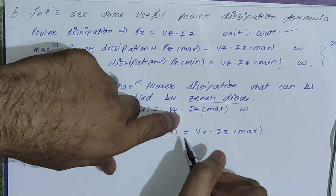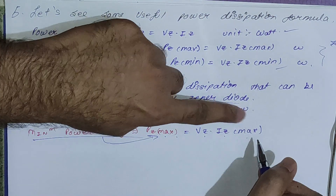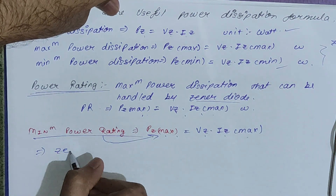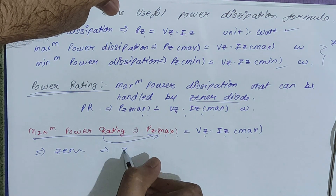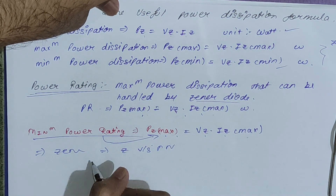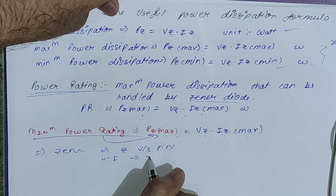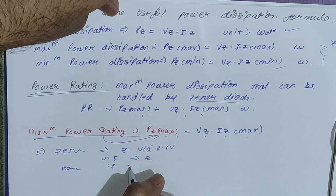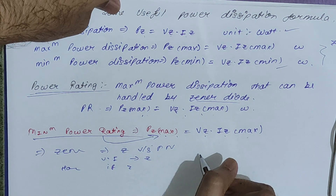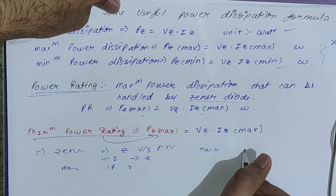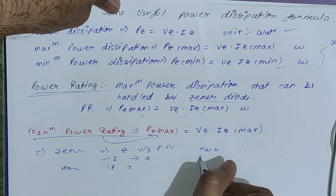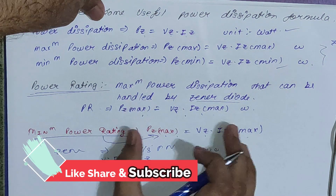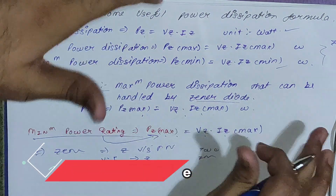To summarize: we covered what a Zener diode is and its difference from a PN diode, the VI characteristics, how to identify if the Zener is in breakdown, the two types of regulation (line and load), and important power dissipation formulas. Hope you understood all these things — that's it for today, thank you!